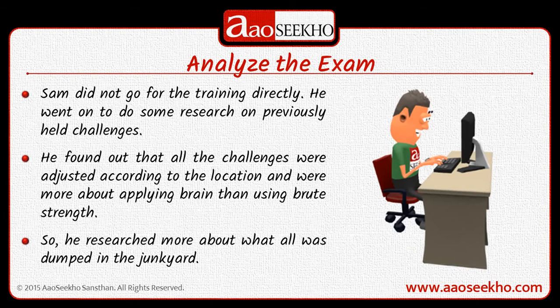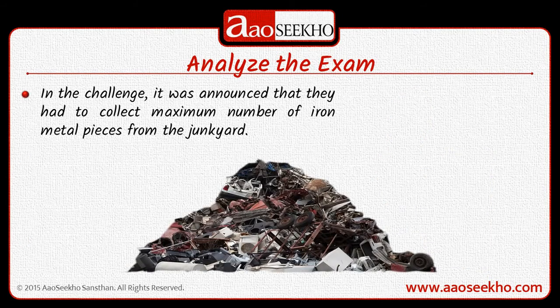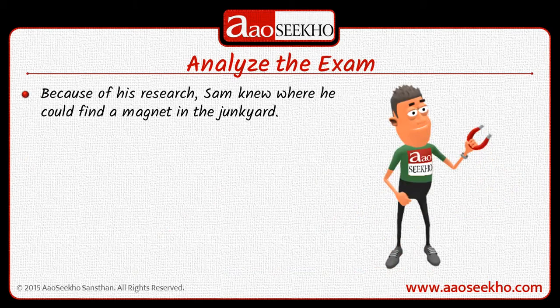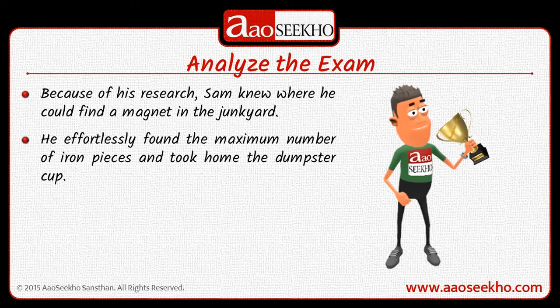So Sam researched more about what all was dumped in the junkyard. In the challenge, it was announced that they had to collect the maximum number of iron metal pieces from the junkyard. Bob was completely taken aback — he could not understand what needed to be done and finally gave up. Because of his research, Sam knew where he could find a magnet in the junkyard. He effortlessly found the maximum number of iron pieces and took home the Dumpster Cup.